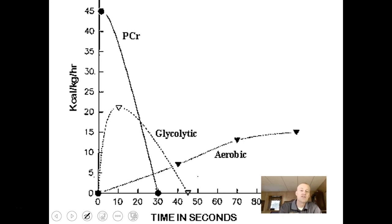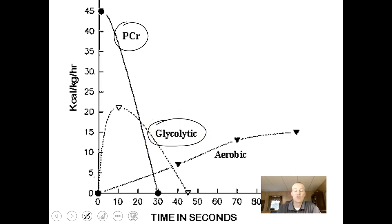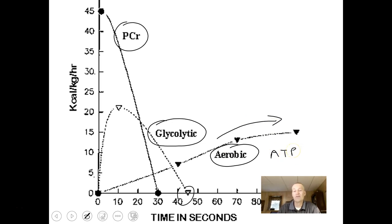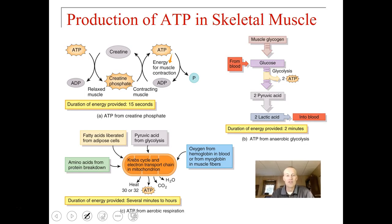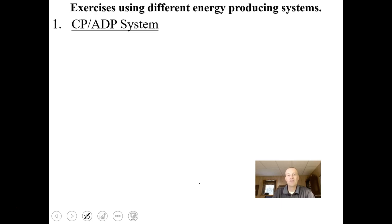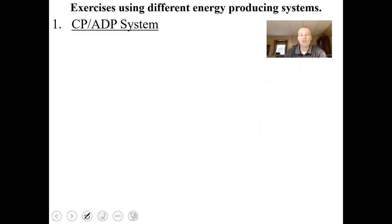Creatine phosphate can only sustain contraction for a short period. The anaerobic or glycolytic pathway also doesn't last long. But aerobic respiration can continue supplying ATP for long periods — used for muscles that maintain posture and for aerobic activities. This graphic shows the different pathways utilized: creatine phosphate for immediate energy, anaerobic respiration next, and then aerobic respiration to release ATP over longer periods. Different exercise types use different energy-generating systems.